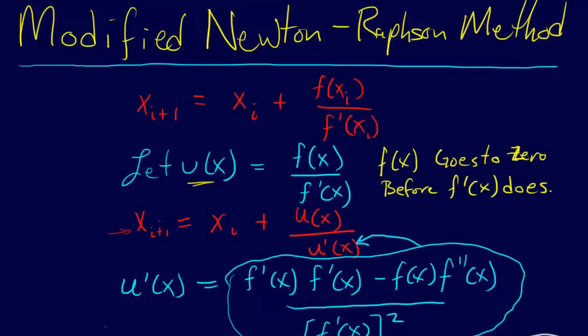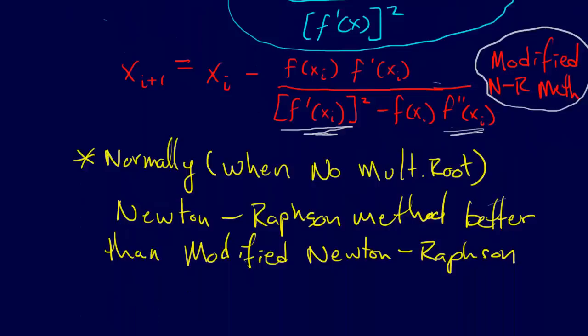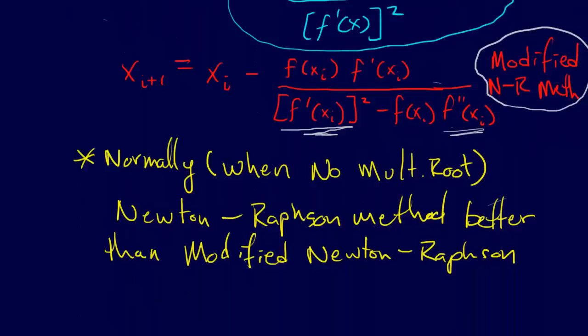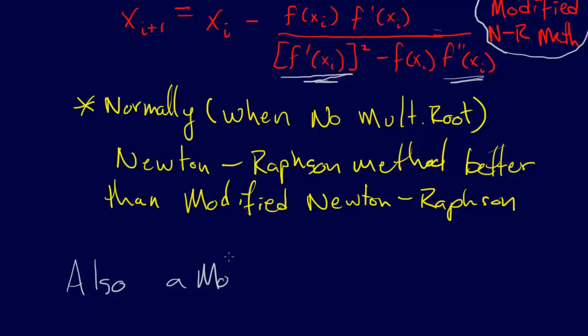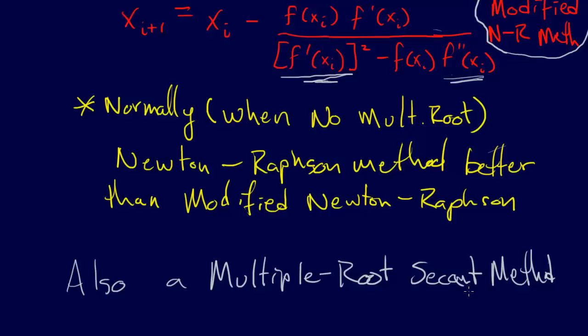This isn't just a hammer you want to pull out every time no matter what — there is some sacrifice that we have to make. There is also a multiple root secant method, which is a modification of the secant method, just as the modified Newton-Raphson is a modification of the Newton-Raphson method, using similar concepts.